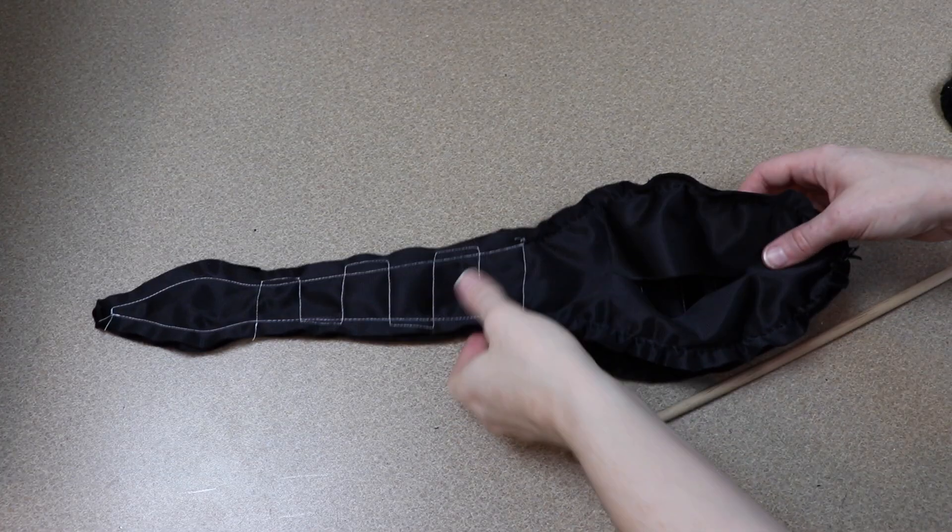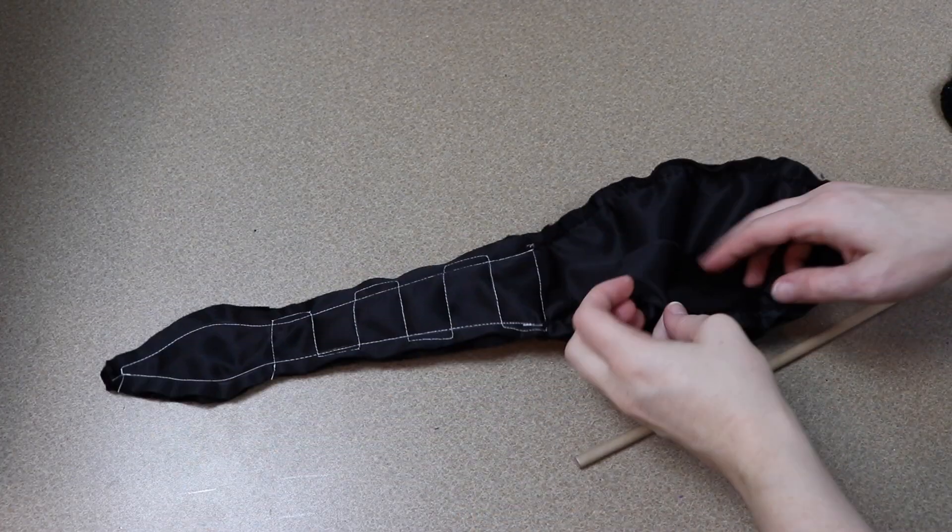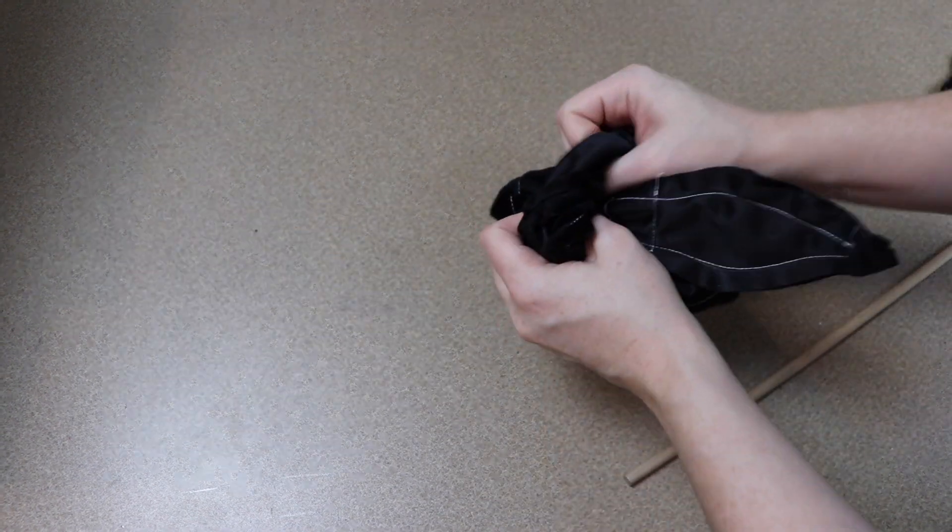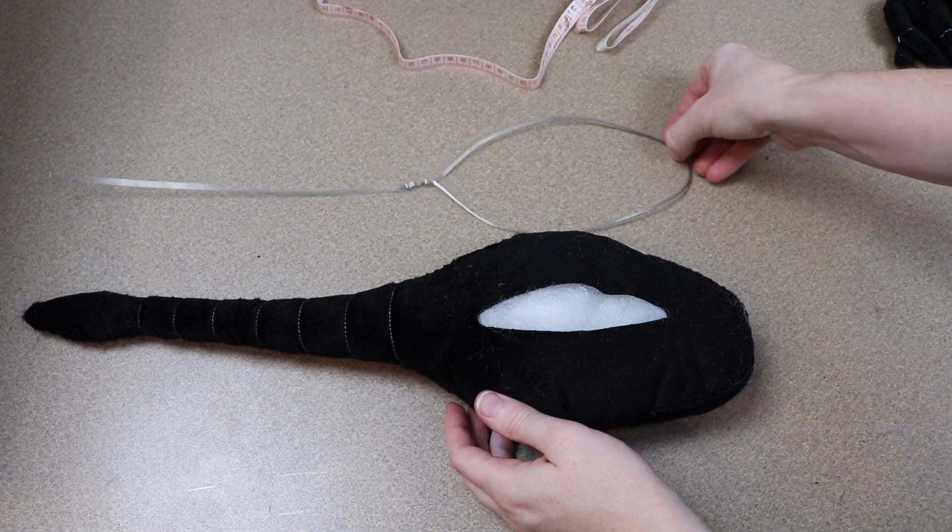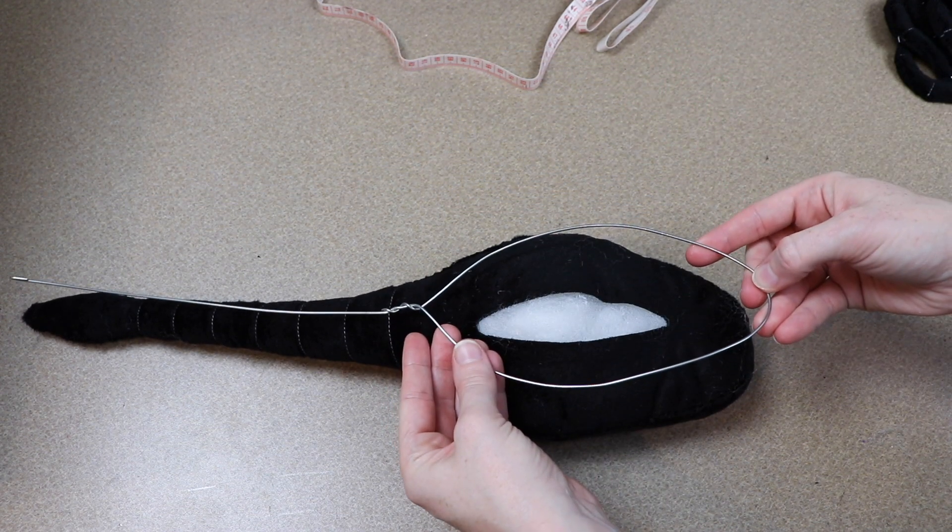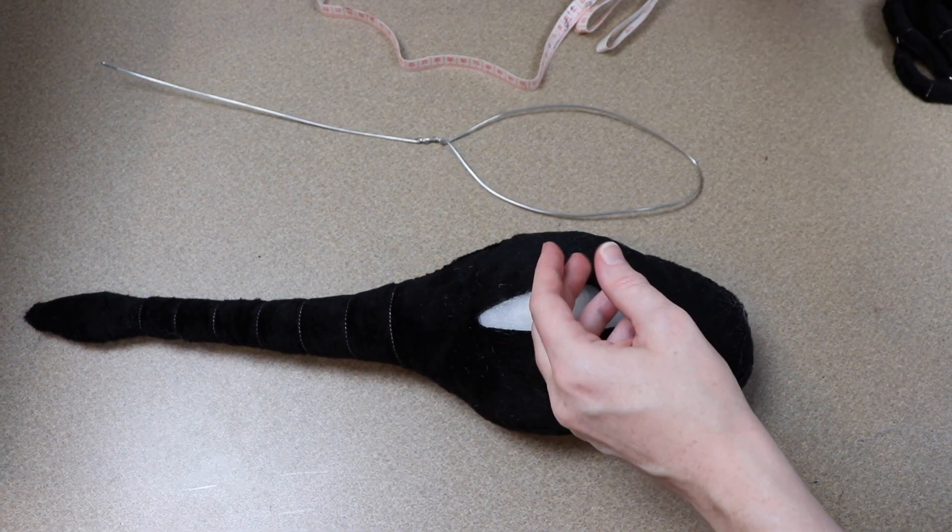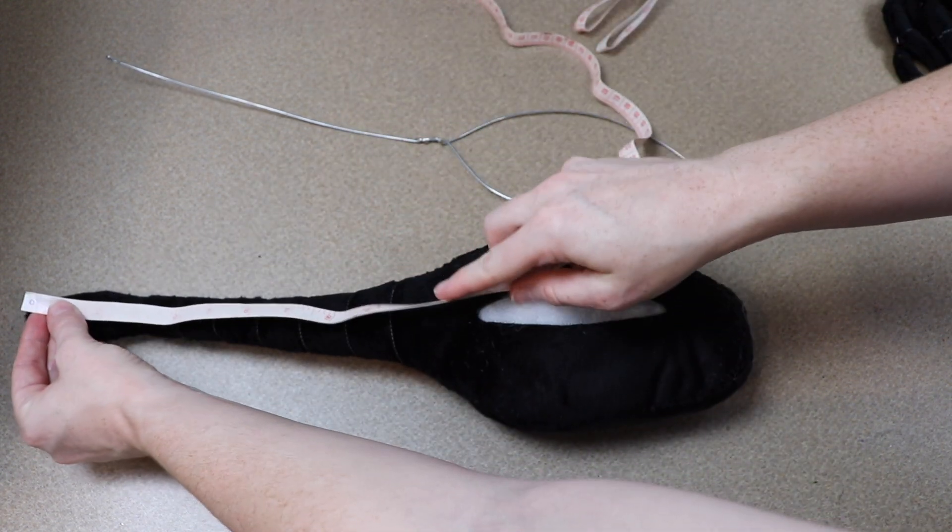We're then going to flip our body right side out. With the tail being so thin you may need a wooden dowel for this. But once you get everything flipped we're going to start stuffing it. And then I want the tail to be able to hold itself up as well. So even though I don't want this super poseable I do want it to hold its shape.